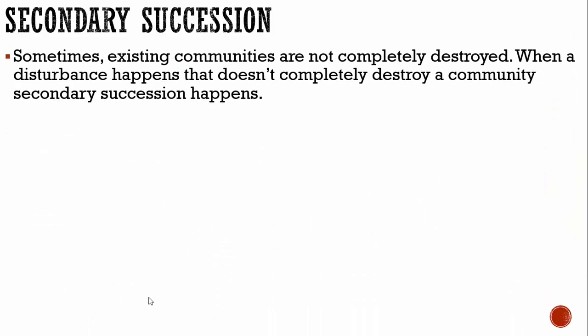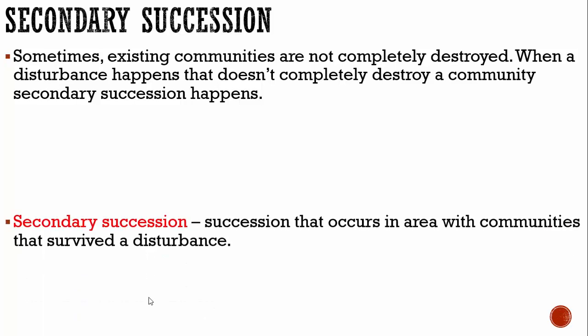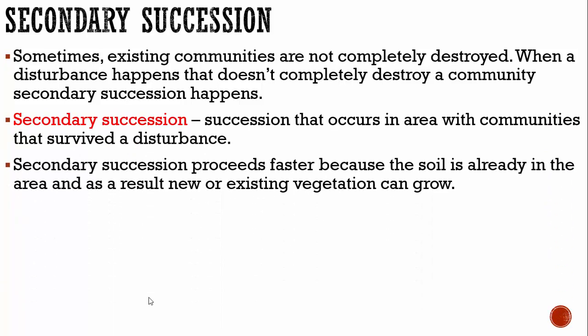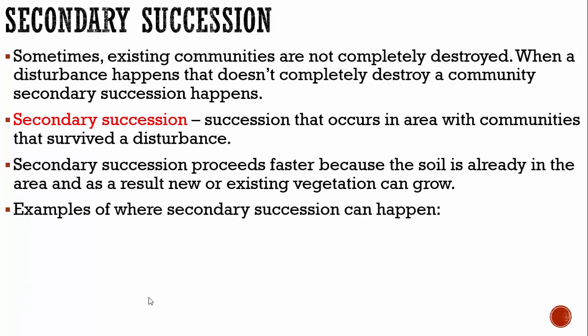Secondary succession: sometimes existing communities are not completely destroyed. When a disturbance happens that doesn't completely destroy a community, secondary succession occurs — succession that takes place in an area with communities that survived a disturbance. Secondary succession proceeds faster because the soil is already present, and as a result, newer existing vegetation can grow.